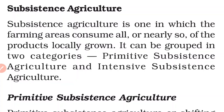Subsistence agriculture is one in which the farming areas consume all or nearly all of the products locally grown. It can be grouped into two categories.